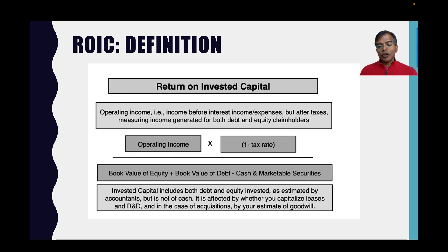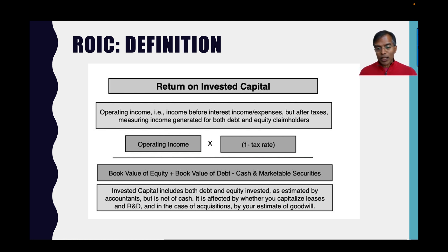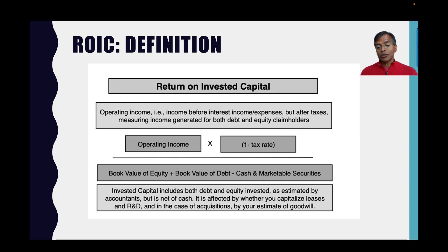In case you're wondering what goes into return on invested capital, there is an entire data set on that. Return on invested capital is operating income after taxes: you take earnings before interest and taxes (EBIT), act as if you pay taxes on that operating income using the effective tax rate, to capture after-tax operating income. Then divide by invested capital, which is book value of equity plus book value of debt minus cash and marketable securities. Cash and marketable securities are netted out because operating income is on operating assets, and cash is not an operating asset.